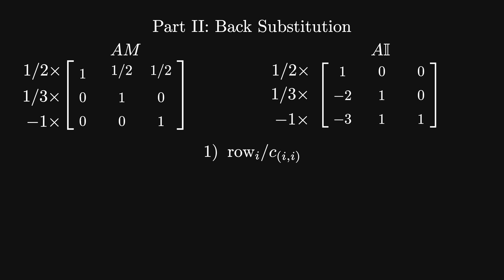When I do this to the identity matrix, I end up with [1/2, 0, 0; -2/3, 1/3, 0; 3, -1, 1].